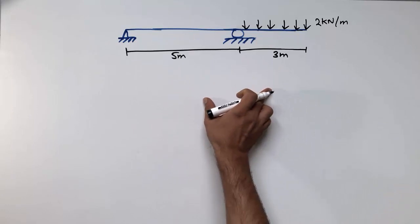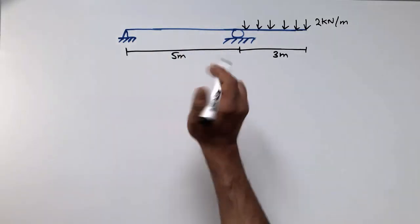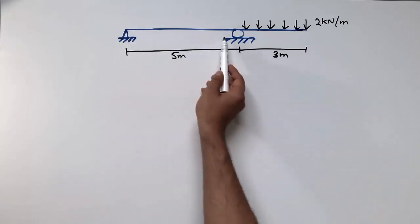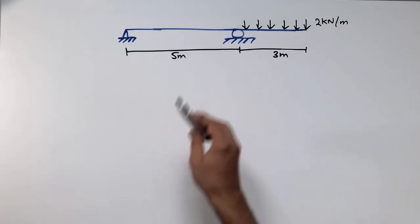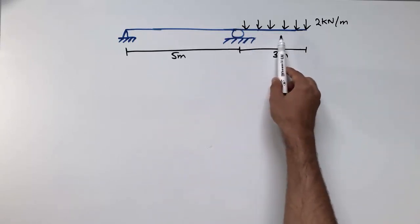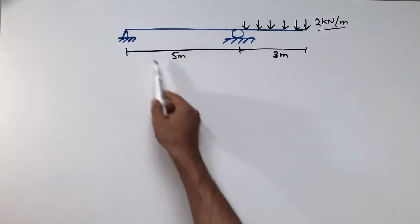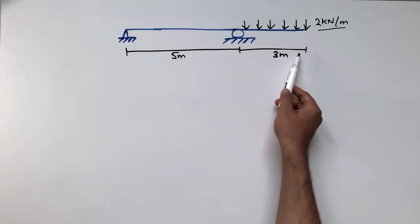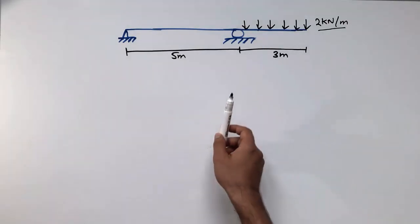This beam is a simply supported beam with a portion extended as a cantilever. The cantilever portion is loaded with a uniformly distributed load of 2 kN per meter over a length of 3 meters. The simply supported span has a length of 5 meters with no load acting on it.